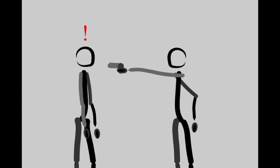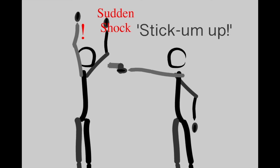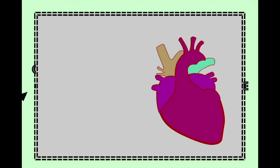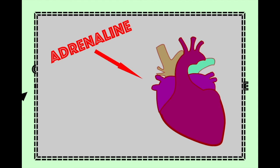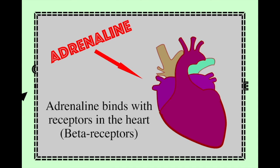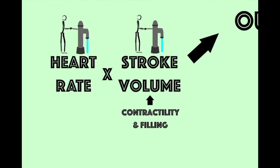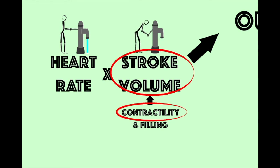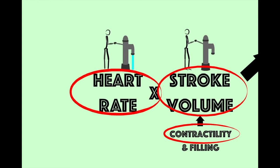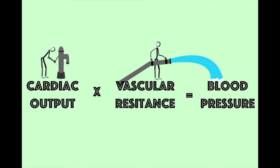If we have a sudden shock, the body's fight-or-flight response kicks in. As part of that response, the body is flooded with adrenaline. Adrenaline binds with special receptors on the heart muscle, causing the muscle to contract more forcefully — increasing stroke volume — and causing heart rate to increase. As a result, cardiac output increases, leading to higher blood pressure.